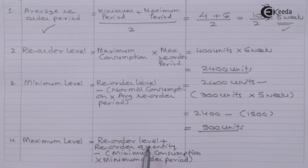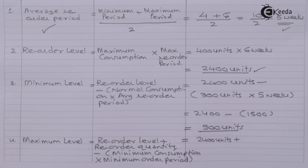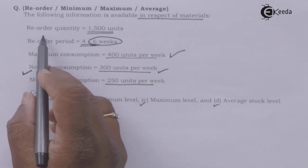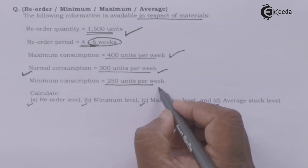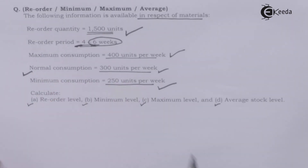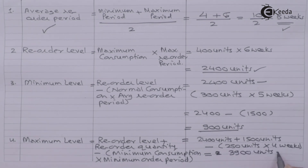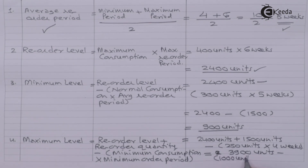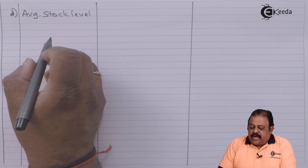Now, maximum level. The formula is: reorder level plus reorder quantity minus (minimum consumption multiplied by minimum order period). Reorder level is 2400 units, plus reorder quantity of 1500 units, minus minimum consumption of 250 units per week multiplied by minimum order period of four weeks — that is 1000. So maximum level equals 2400 plus 1500 minus 1000, giving 2900 units.